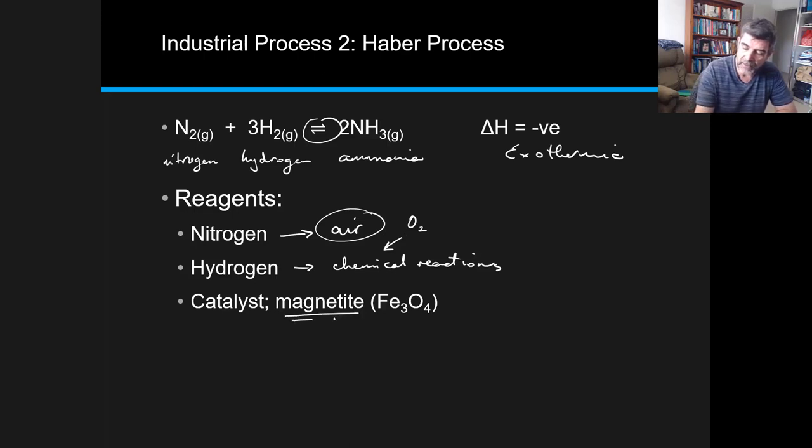The Haber process also uses a catalyst, which is magnetite. But more importantly, our understanding of equilibrium systems allows us to manipulate the conditions in different ways to help us maximize the yield, to get as much of the ammonia as we possibly can.